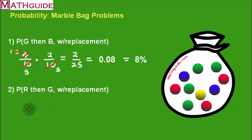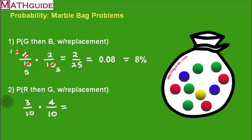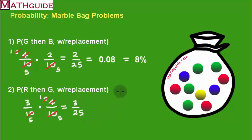Let's try another problem. What's the probability of pulling a red marble? There are 3 red marbles out of 10. Whatever I pull the first time, I put it back in the bag, resetting the bag to 10 marbles. Now what's the chance of pulling green? There are 4 green. Before multiplying across, let's reduce: divide 4 and 10 by 2 to get 2/5, then divide 2 and 10 again by 2. Now multiplying across, I get 3/25. That means roughly 3 out of every 25 times, I'll get red then green.